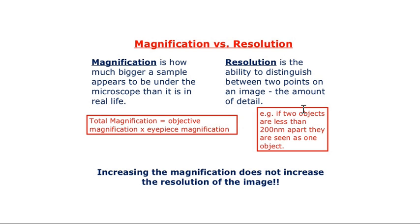Now there are two important terms when we talk about microscopes: magnification and resolution. Magnification is how much bigger a sample or cell appears under the microscope than in reality—the multiplication of the real size. Resolution is the ability to distinguish between two points of an image, the amount of detail—how close two objects can be while still being distinguishable.